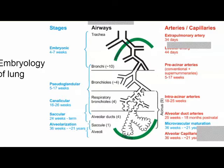The next stage is the pseudoglandular stage, occurring between 5 to 17 weeks, during which multiple bronchi are formed. On one side, bronchial and tracheobronchial formation occurs from the foregut endoderm; on the other side, arteries and capillaries are derived from the splanchnopleuric mesoderm. During the pseudoglandular stage, bronchioles and conducting epithelium are formed.